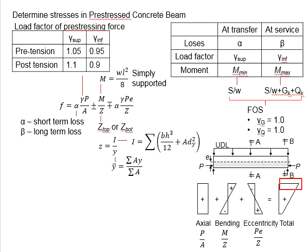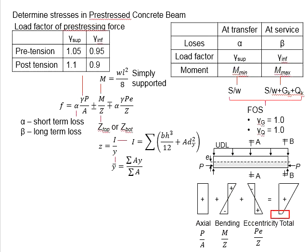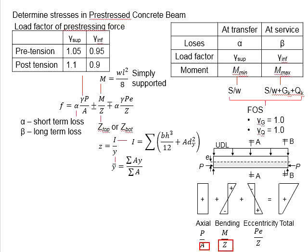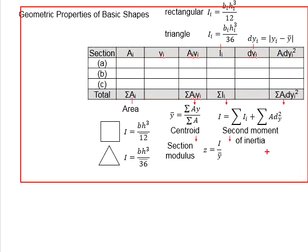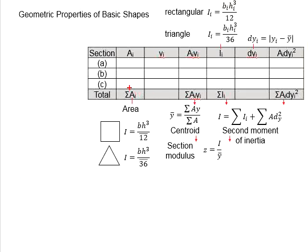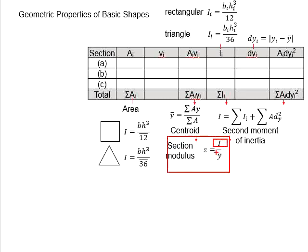To determine the total stress on top of the beam, that will be P/A plus M/Z minus Pe/Z. As for the total stress at the soffit of the beam, it will be P/A minus M/Z plus Pe/Z. The area and section modulus are obtained from the geometrical property calculations discussed earlier — the area is the summation of all part areas, and the section modulus is I divided by Y.